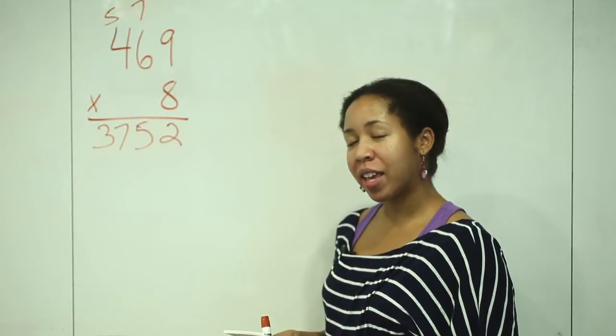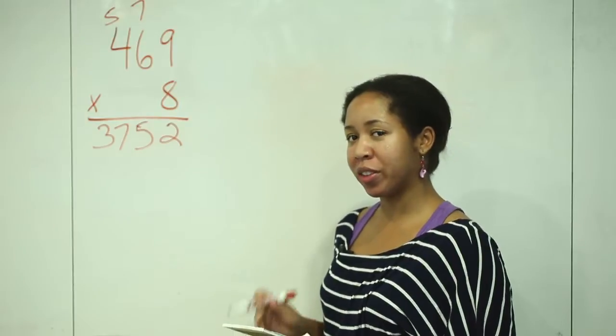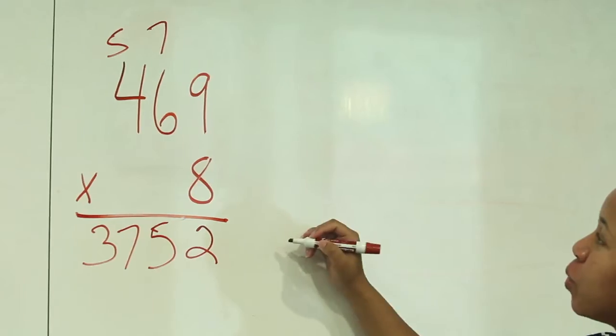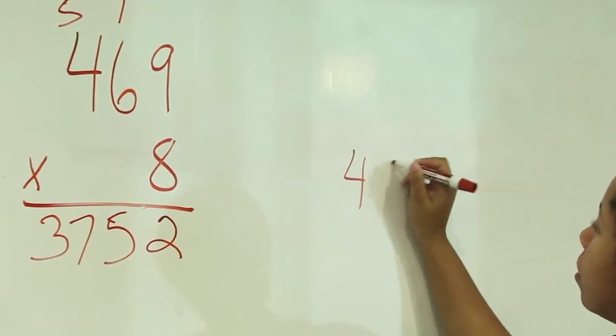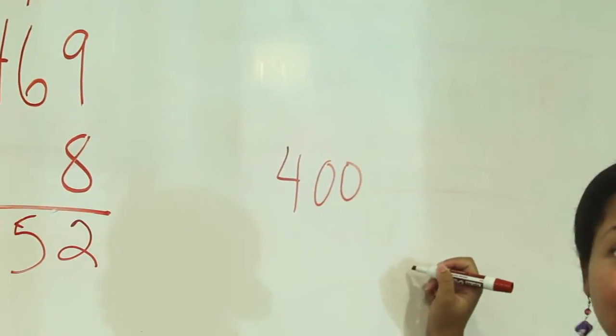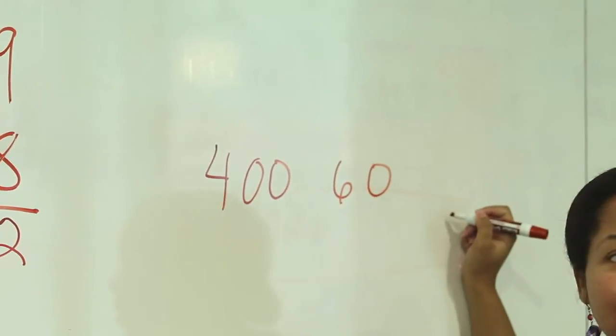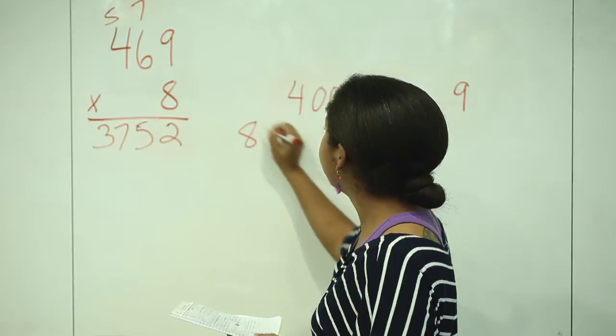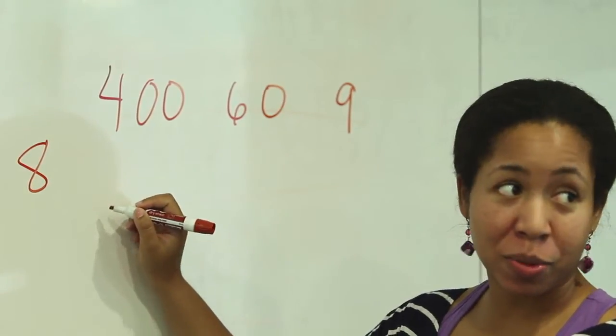But under Common Core, they ask you to go about it a little bit differently. Instead of 469 atop 8, you would break out the 400, break out the 60, and then break out the nine. The eight would go over here, and then you draw a picture to represent your work.